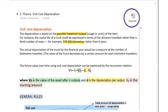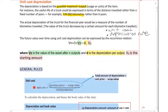This is one way to do it. The actual depreciation of the truck for the financial year would be measured by the number of kilometres travelled, so the value of the truck decreases by a certain amount for each kilometre travelled. You can call it basically a unit cost or a depreciation rate. In older exam papers you might see it written in terms of unit cost.